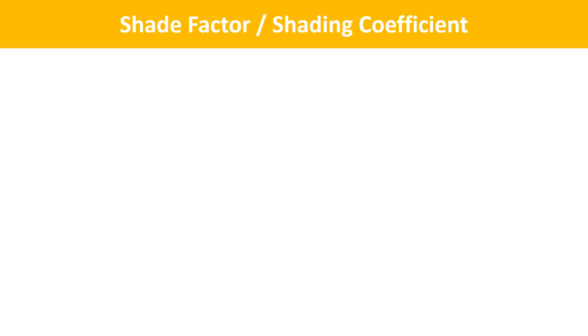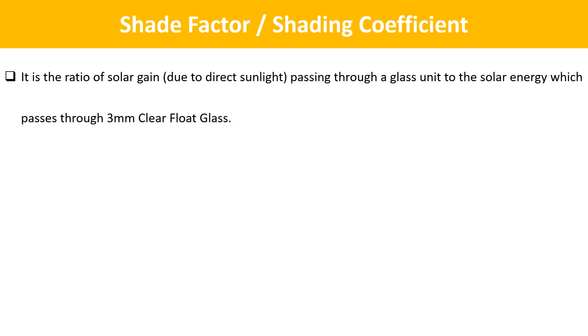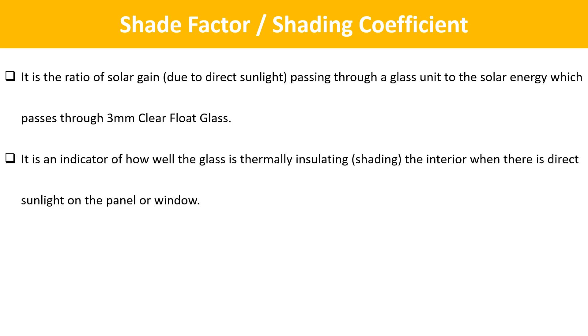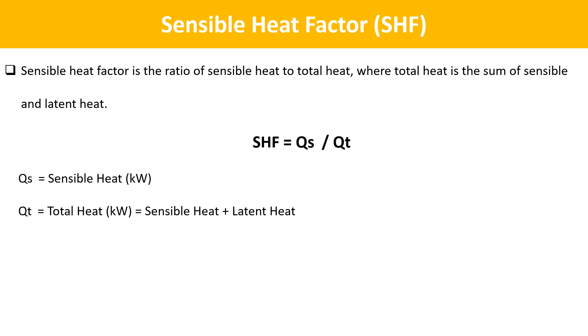The next term is Shading Coefficient. It is the ratio of solar gain due to direct sunlight passing through a glass unit to the solar energy which passes through 3 mm clear float glass. It is an indicator of how well the glass is thermally insulating the interior when there is direct sunlight on the panel or window. The next term is Sensible Heat Factor. Sensible heat factor is the ratio of sensible heat to total heat, where total heat is the sum of sensible and latent heat.